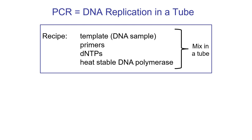We start with a tube containing a mixture of several things: our DNA sample — the template we want to copy; primers, which are short pieces of DNA complementary to the ends of what we want to copy; nucleotides — dNTPs, where the D stands for deoxyribose, so these are DNA nucleotides, and the N means we use all four: A, T, C, and G; and our heat-stable Taq polymerase from Thermus aquaticus. There's also some buffers and salts.